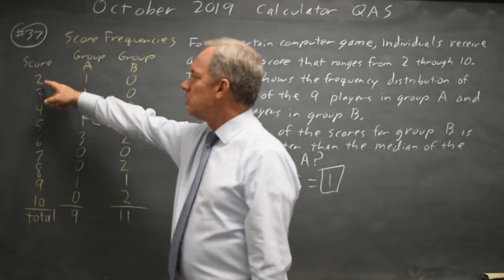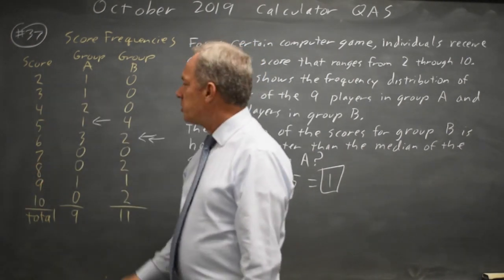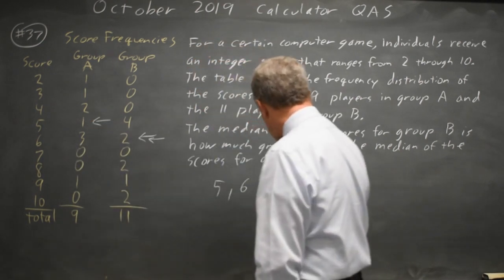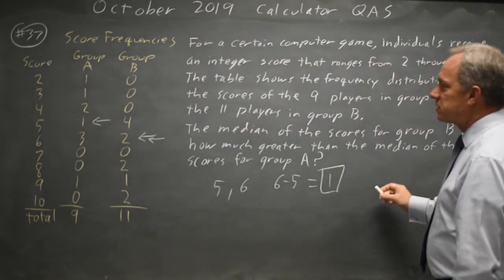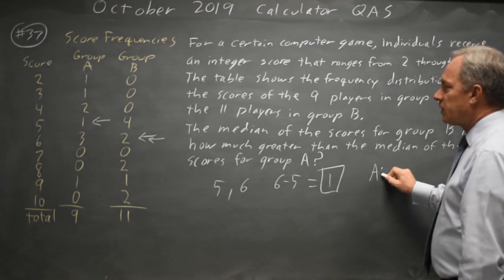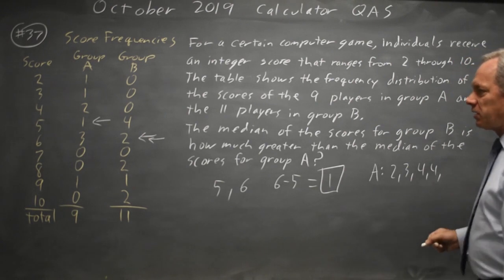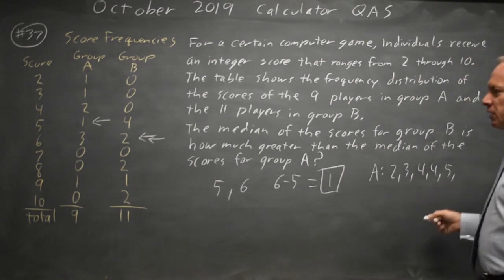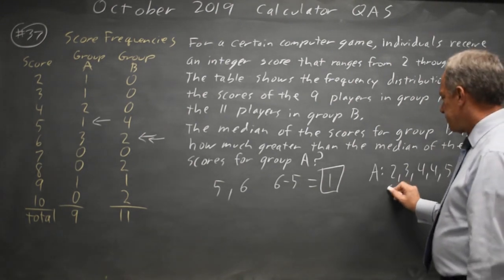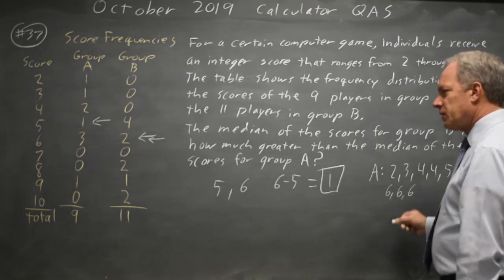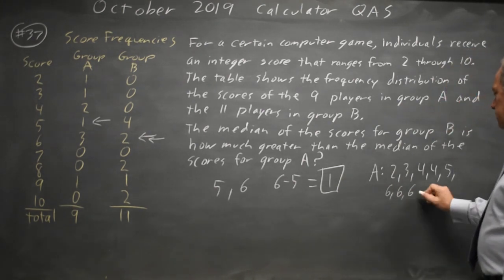You're looking for the median of these scores when this is how many times each score occurred. You could also write it as group A has a two, a three, two fours, and a five, and then three sixes, and a nine.